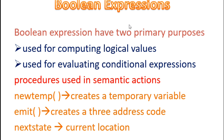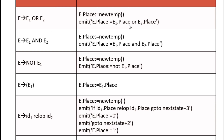The third function is called nextstate. Nextstate represents the current location of the statement. These are the three functions connected with semantic actions. We have a list of productions on the left side and the corresponding semantic actions on the right side.